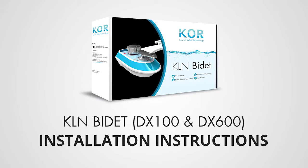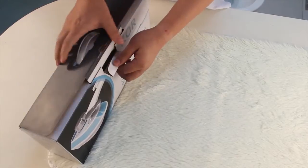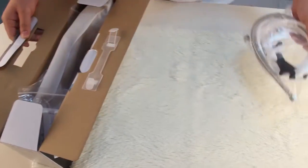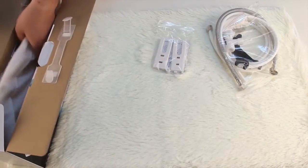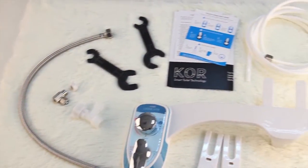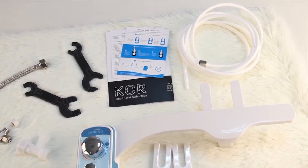Congratulations on purchasing your new CORE KLN Bidet! When you first open the package, you will see a package containing the hoses, washers, T-adapters, wrenches, the bidet mounting plate, user manual, and the KLN Bidet.